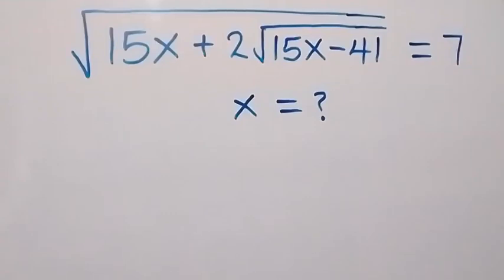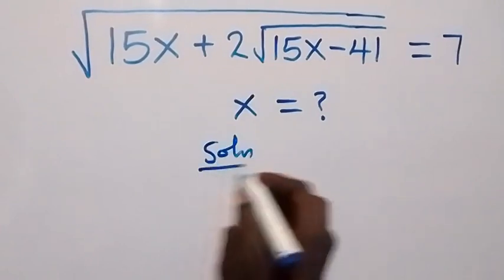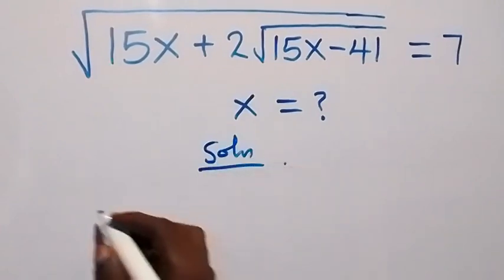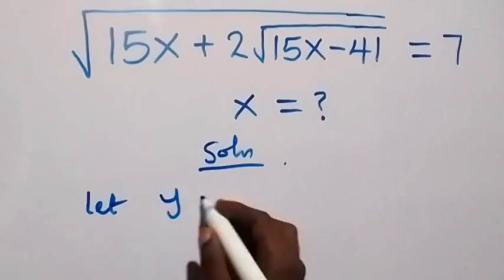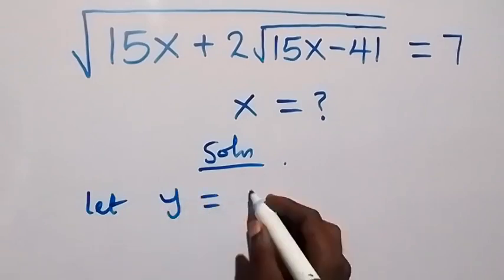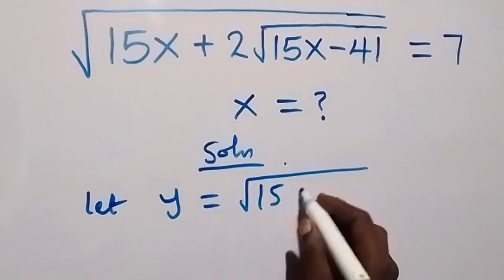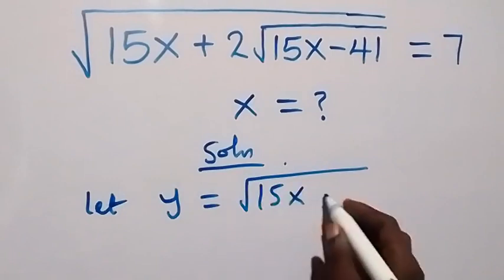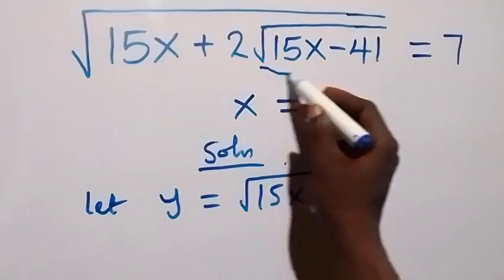Hello, you are welcome. How to solve for x in this square root problem. Let y be equals to the square root of 15x minus 41 — that is what we have here.